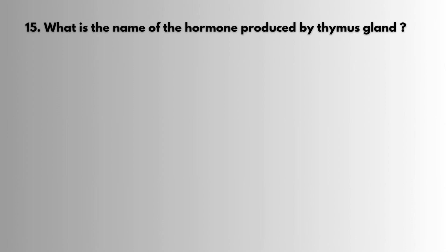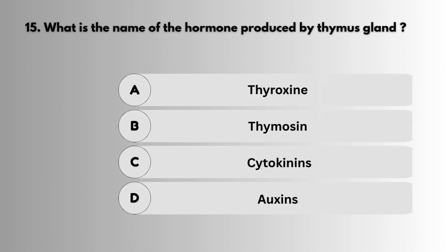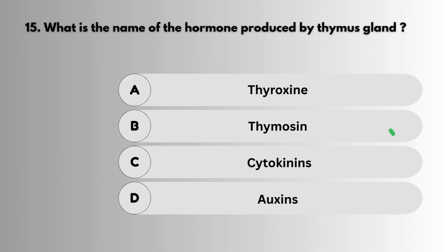Question 15: What is the name of the hormone produced by the thymus gland? Answer: Thymusin.